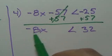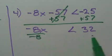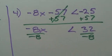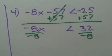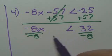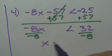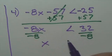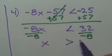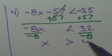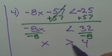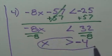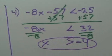Next, I'll get rid of the negative eight by dividing by negative eight. I divided both sides by a negative — do I switch the arrow? Yes, you do. Eight goes into thirty-two four times, and there's one negative. And there's your answer.